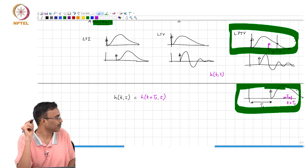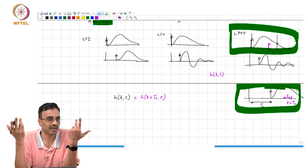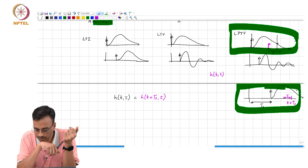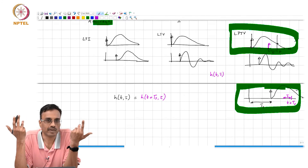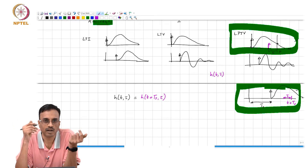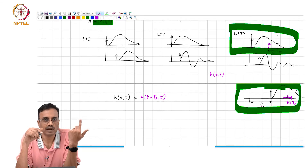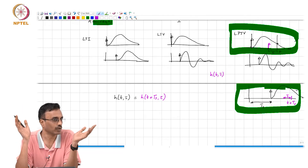So if you move by exactly T_s, you do not know that anything has changed. It is like taking a particularly strong dose of anesthetic — you wake up 4 days later and everything looks exactly as it does today. So H of t comma tau is simply the same as H of t plus T_s comma tau, which is obviously the same as H of t plus 2 T_s comma tau, and so on.